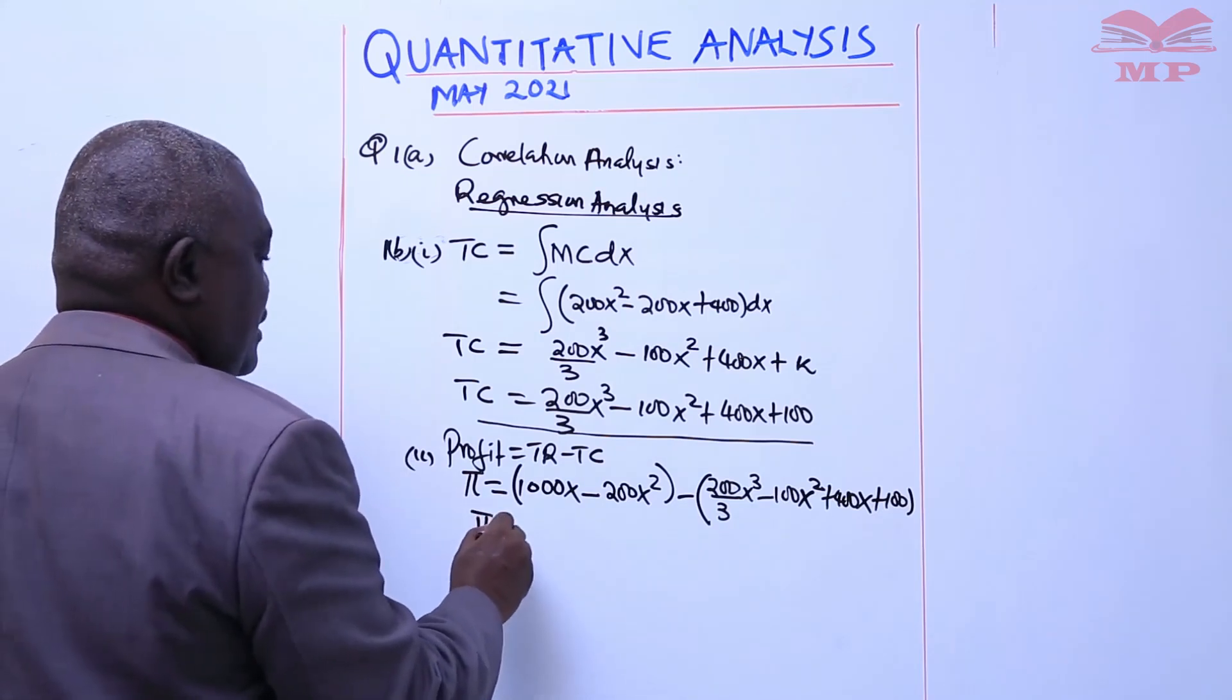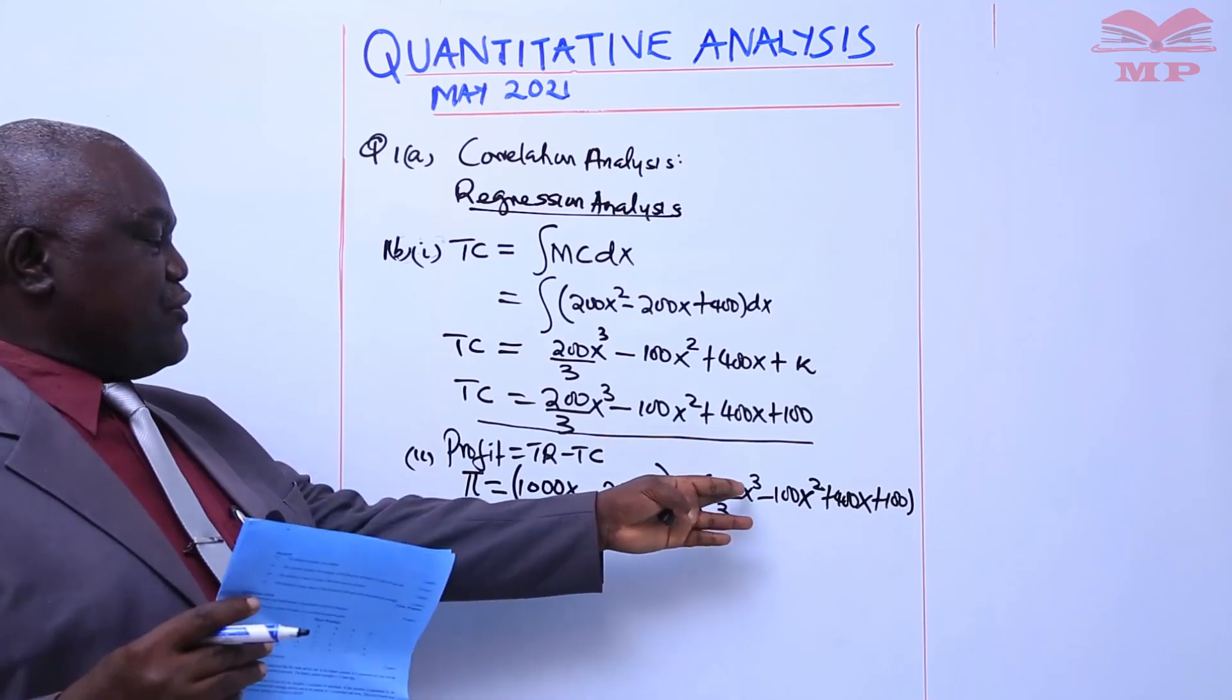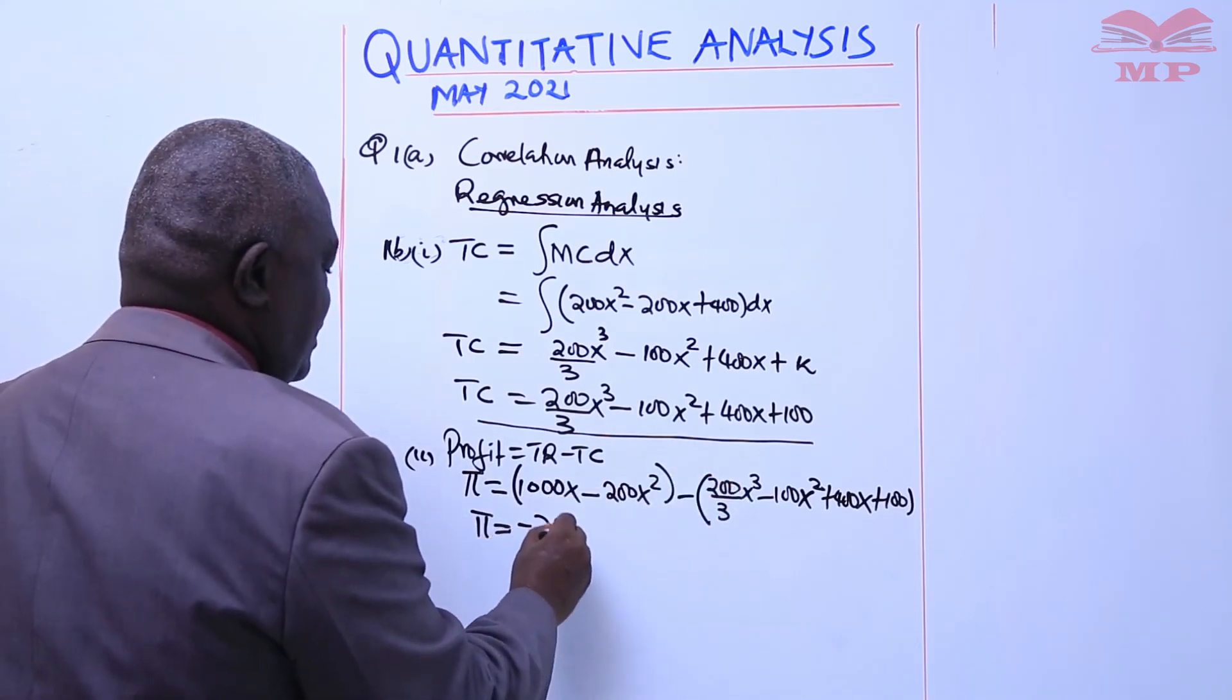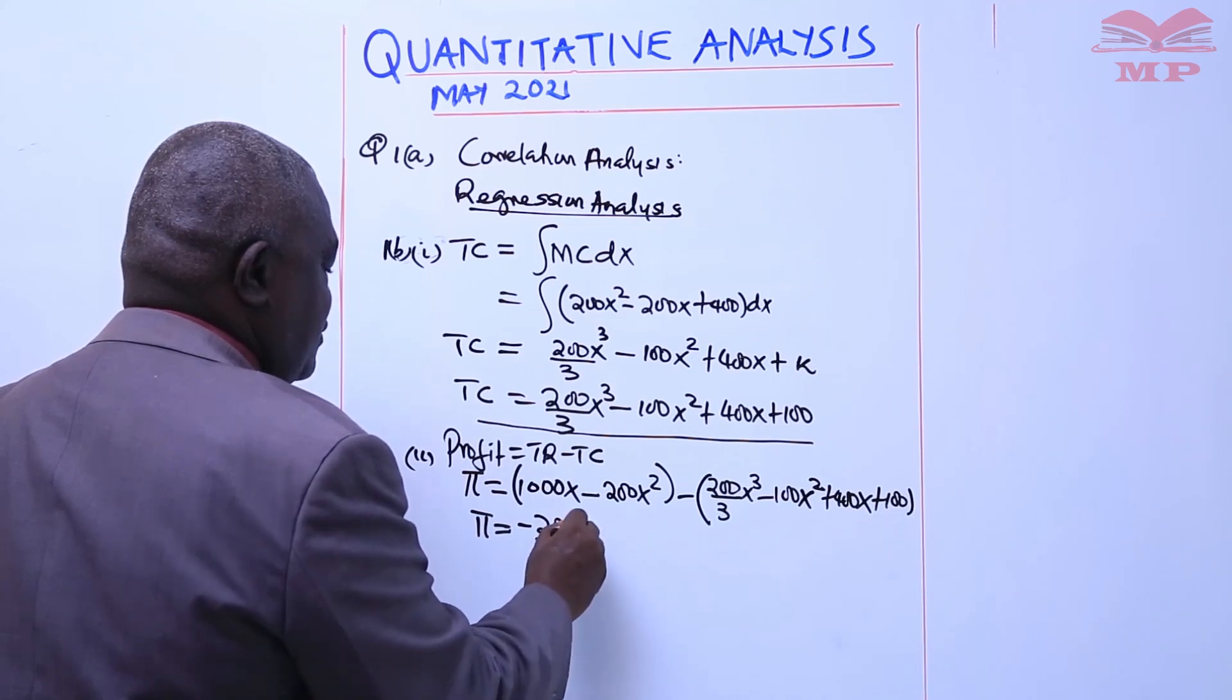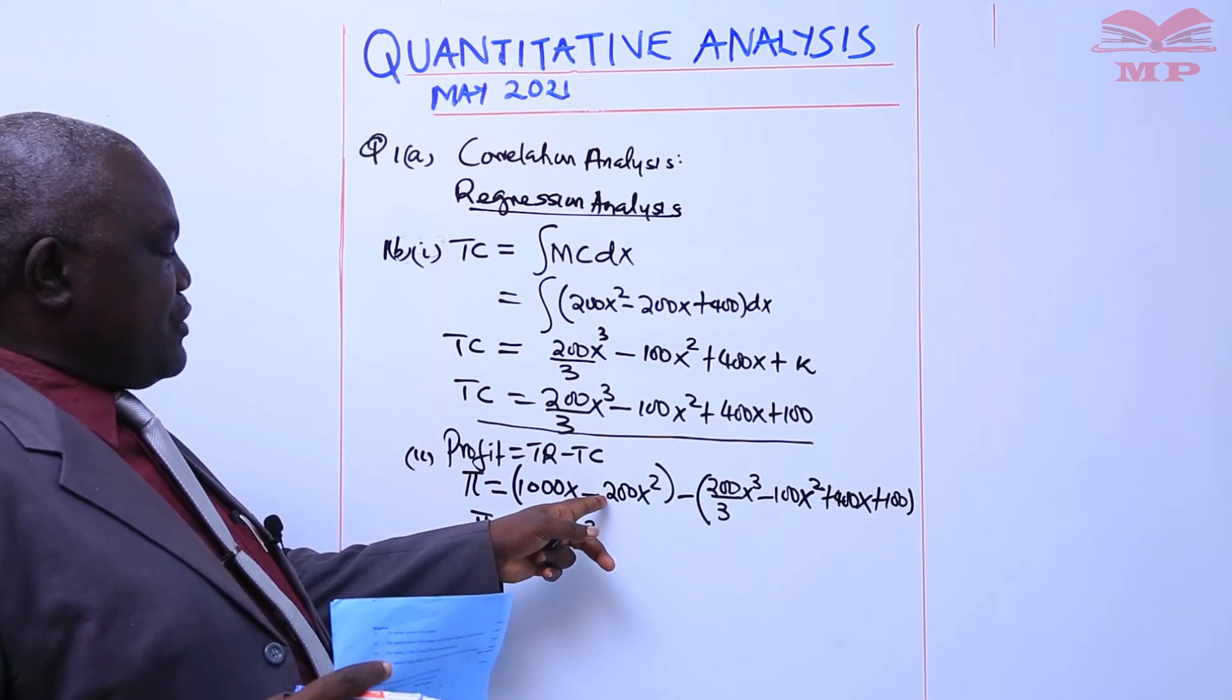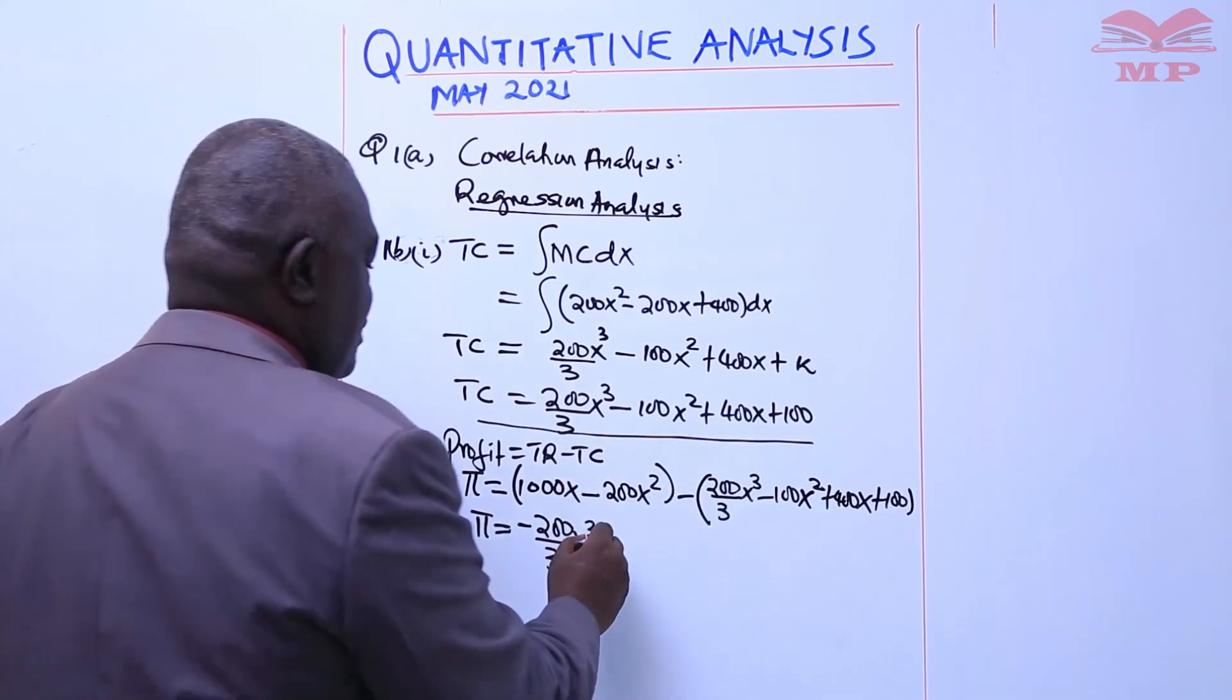in decreasing index of all powers of X. I start with X³: -200/3 X³. Collecting like terms for X²: -200X² minus (-100X²) becomes plus, which is still -100X².